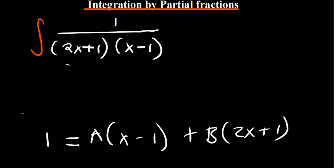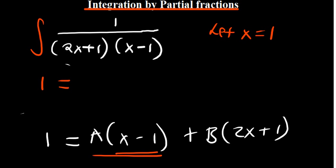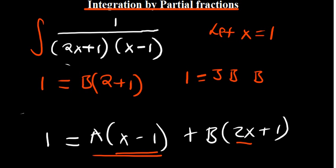Now let's find our values of A and B by elimination. Think of a number that if you plug it in where x is, gives you a zero. If I let x equal to 1, the A-term is going to be eliminated, so you remain with B. Where there's 2x we put 1: 2 times 1 is 2, plus 1 gives 3. So 1 equals 3B.